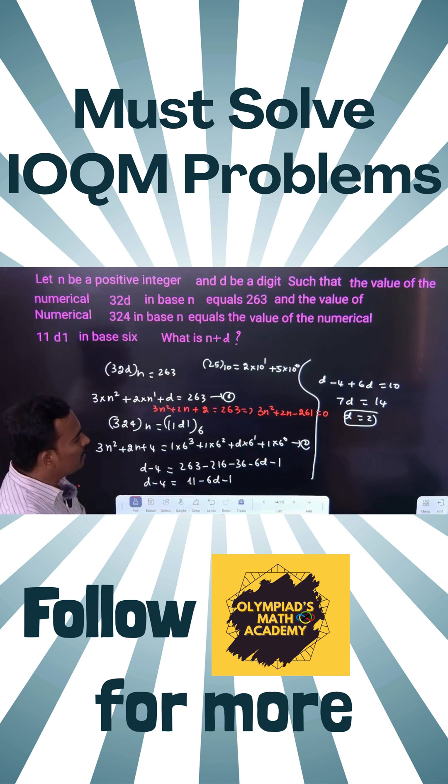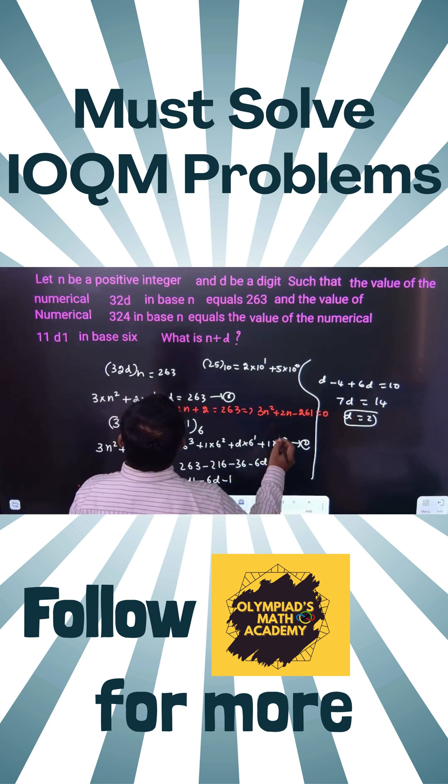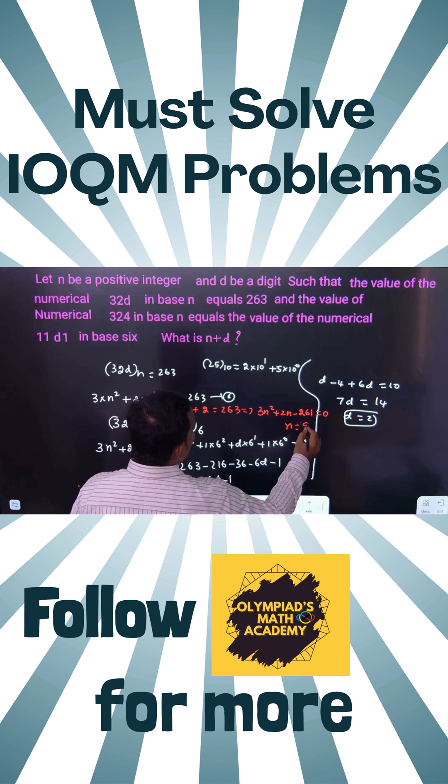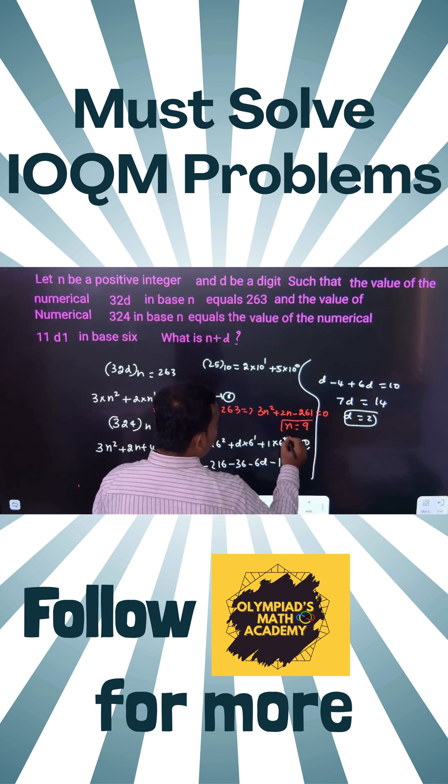Minus 261 equals 0. If you solve this, the positive integer value for n is 9.6 something, so the integer will be 9.